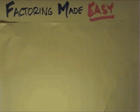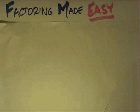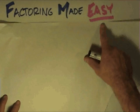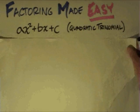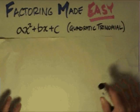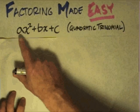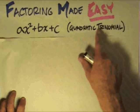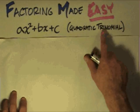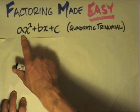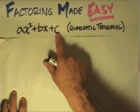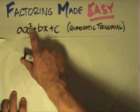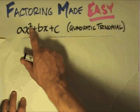Welcome my YouTube minions. We are talking about factoring today and we're gonna make it easy. We are looking at quadratic trinomials. Trinomial just means it has three terms — that's where the 'tri' comes in. 'Nomial' just means term or name, so we've got three parts here. Quadratic is a second degree variable.